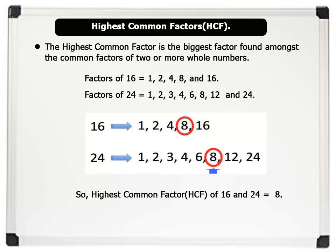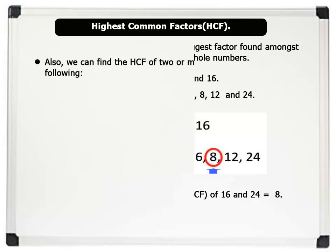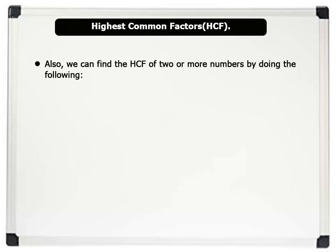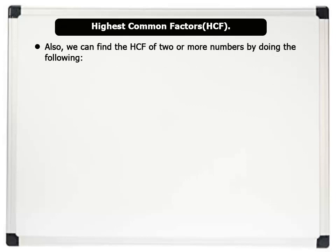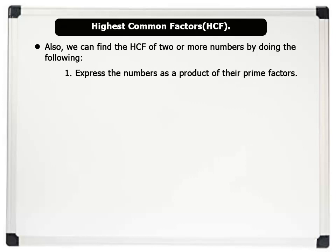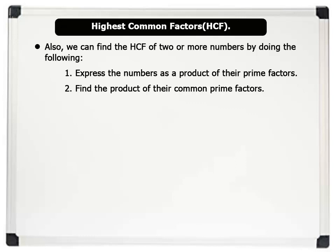That's brilliant. Also, we can find the HCF of two or more numbers by doing the following: 1. Express the numbers as a product of their prime factors. 2. Find the product of their common prime factors. Let's see our final example.